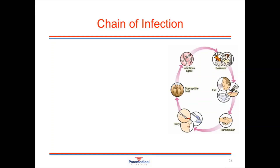Infections and diseases can only spread when the conditions are right. We call these set of conditions the chain of infection. There are six links in the chain, and all of these need to be intact for infection to spread from one organism to another. The first link is the pathogenic agent — examples include a bacterium, virus, fungi or parasite — which must be present for an infection to take place.